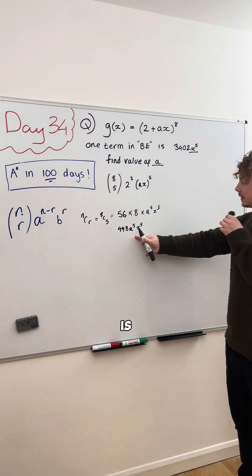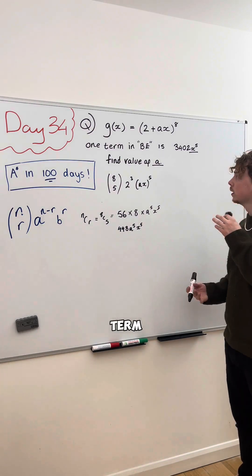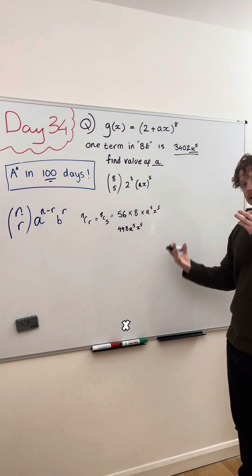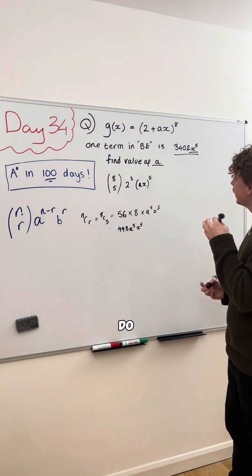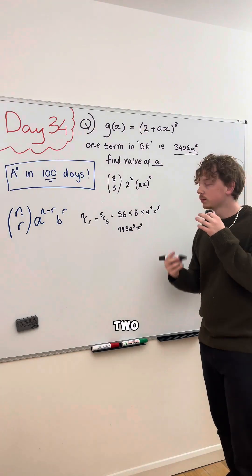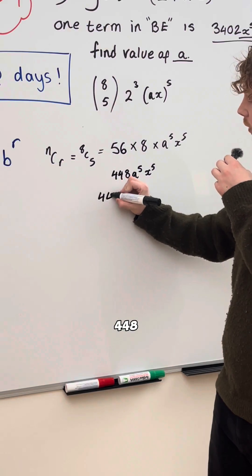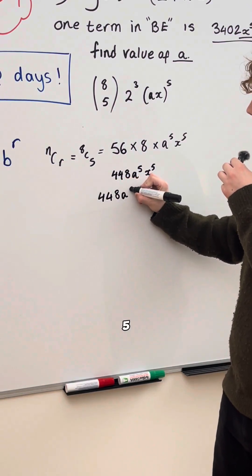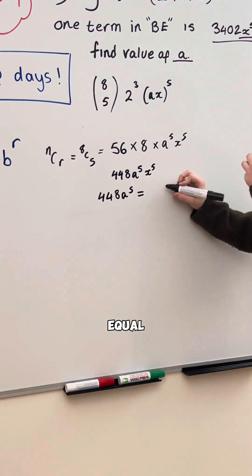Now, this is the x to the power of 5 term, but we also have this is the x to the power of 5 term. So, what we can do is we can make the coefficients of these two equal. 448 A to the power of 5 is equal to 3,402.